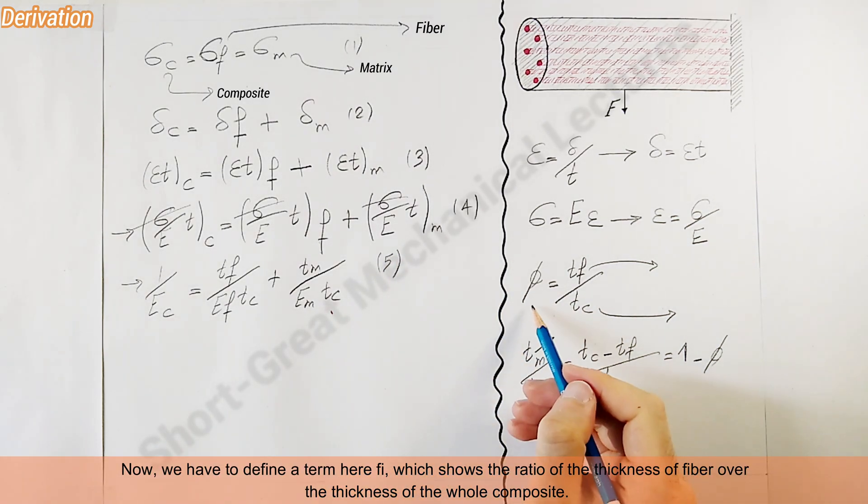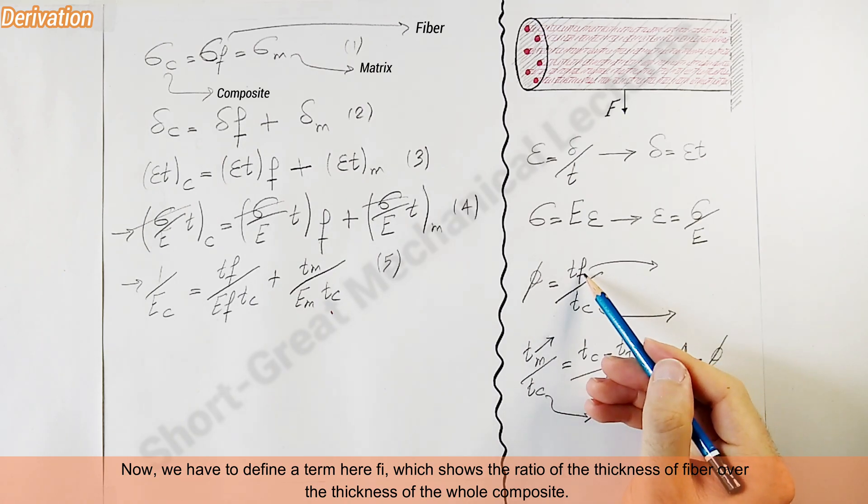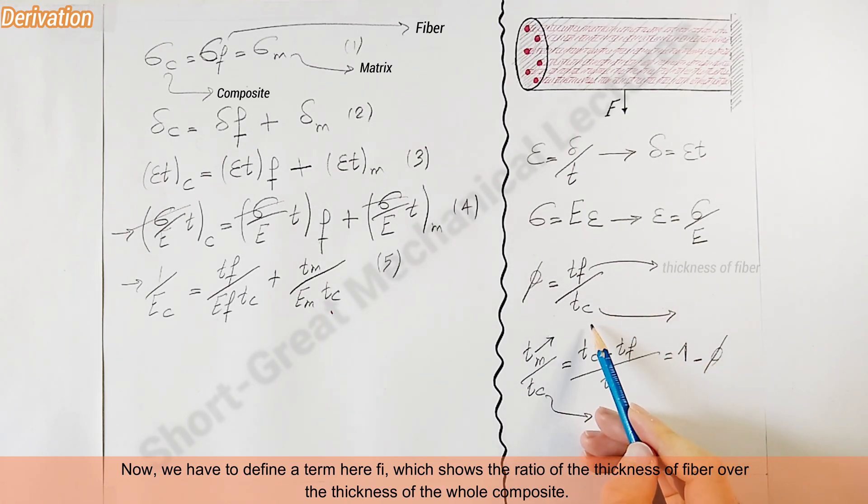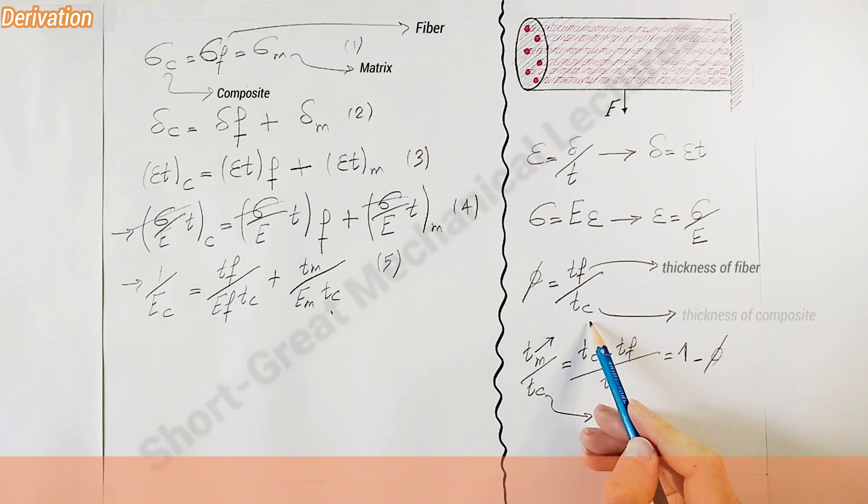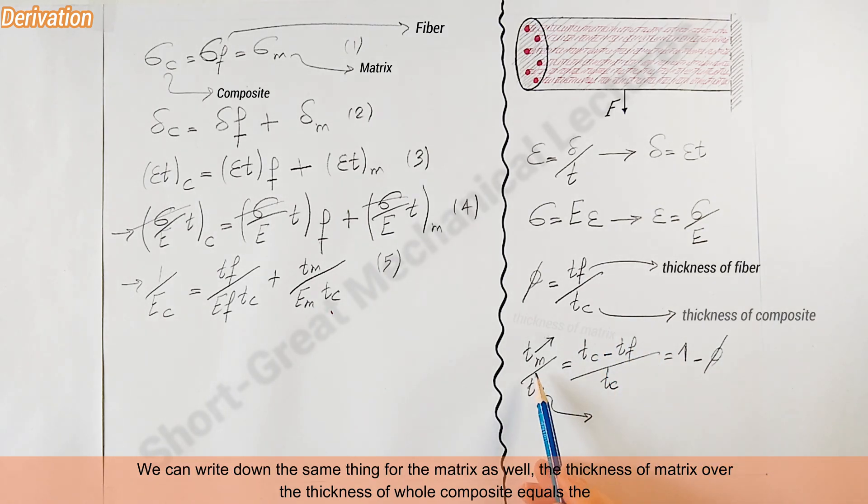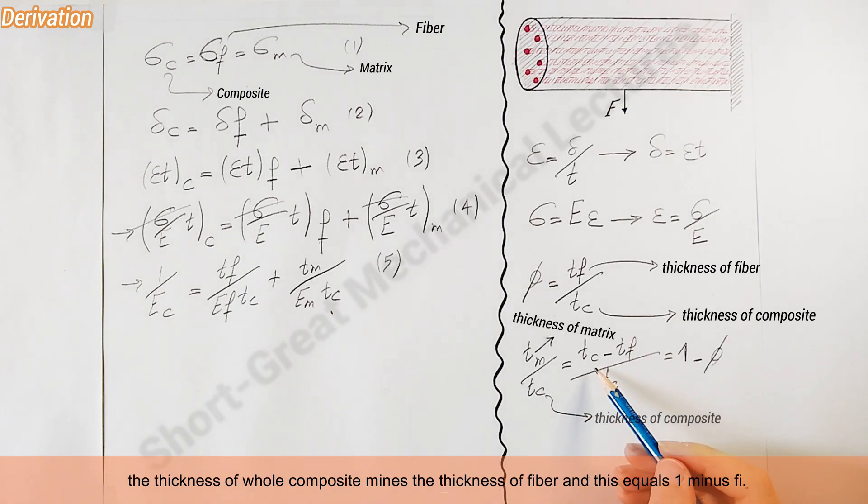Now we have to define a term here, phi, which shows the ratio of the thickness of fiber over the thickness of the whole composite. We can write down the same thing for the matrix as well. The thickness of matrix over the thickness of whole composite equals the thickness of whole composite minus the thickness of fiber, and this equals one minus phi.